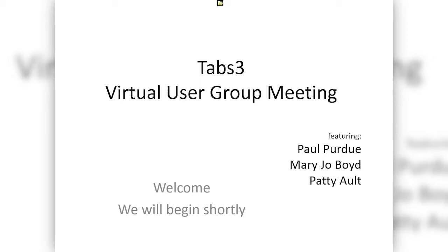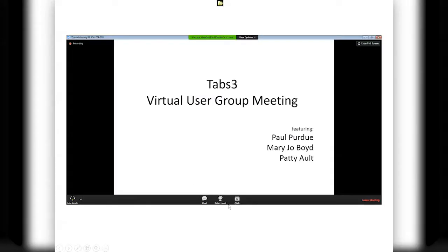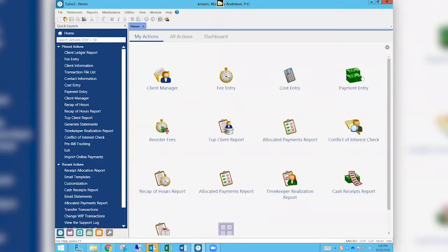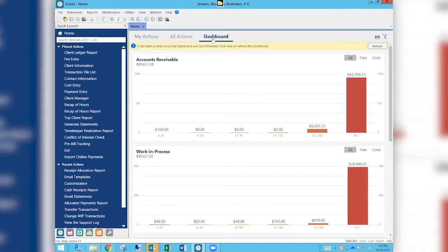Today we are talking about two topics: viewing active users, something we find a lot of people have questions about, and the new NetDocuments integration that will allow you to have Tabs and when you create matters have them instantly show up in NetDocuments. So without any further ado, I'm going to get over to Tabs so that Mary Jo can talk to us about viewing active users.